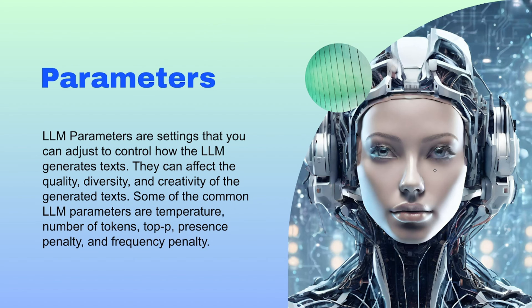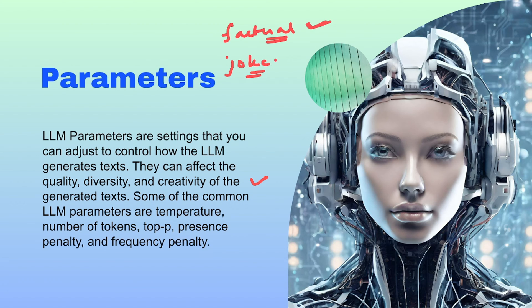LLM parameters are settings that you can adjust to control how they affect the quality, diversity, and creativity of the generated text. For example, if your use case requires factual knowledge, you need to be very concise — parameters are the main settings that bring this change. Some of the common LLM parameters are temperature, number of tokens, top-p, presence penalty, frequency penalty, and top-k.